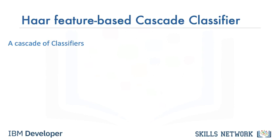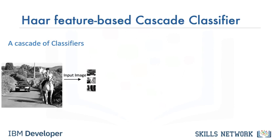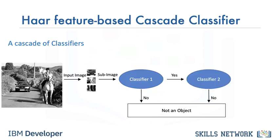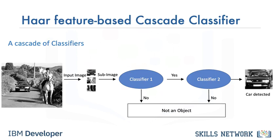Cascades of classifiers are then used. This classifier groups sub-images from the input images in stages and disregards any region that doesn't match the object it is trying to detect. To detect the car in this image, the classifier groups the features into multiple sub-images, and the classifier at each stage determines whether the sub-image is the object we are trying to detect. If it is not, the sub-window is discarded along with the features in that window. If the sub-window moves past the classifier, it continues to the next stage where the second stage of features is applied, until it is sure that it is a car.